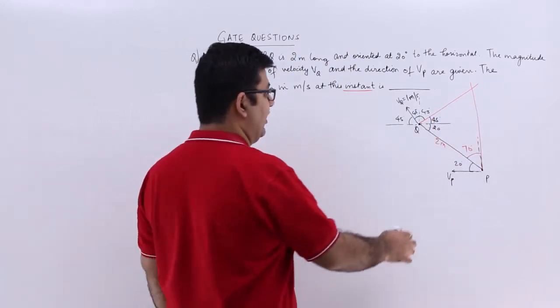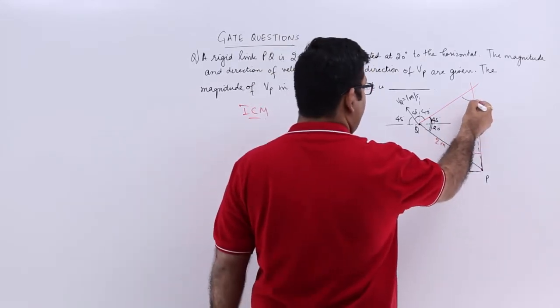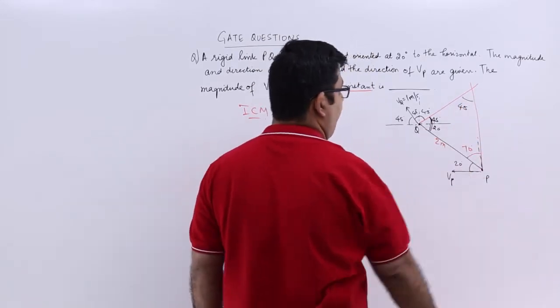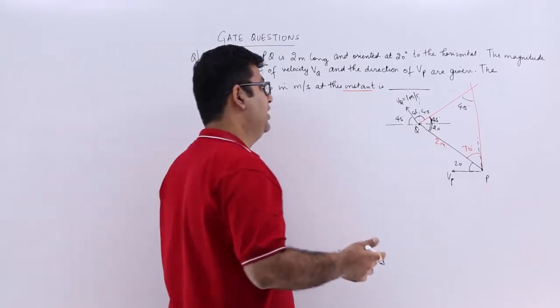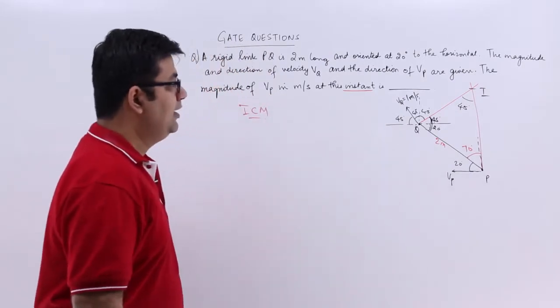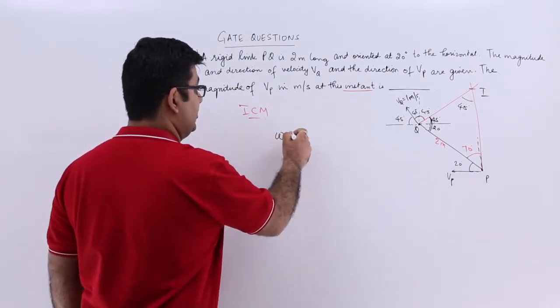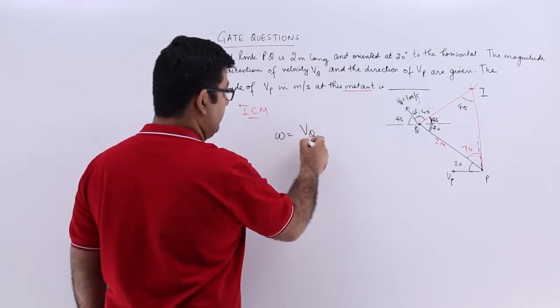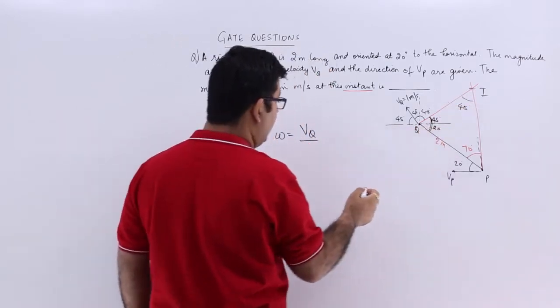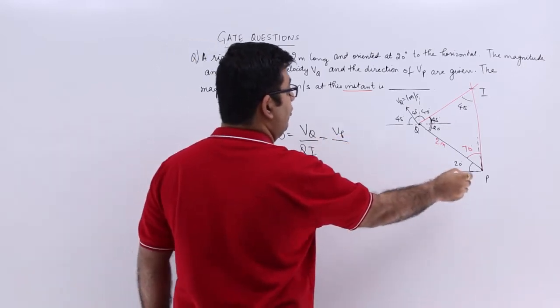This is 45 plus 20 is 65, this is 70, so this will be automatically 45 because the sum of three angles of a triangle is 180. So this is I. At this instant you will have your omega constant which is vq upon qi equals vp upon pi.